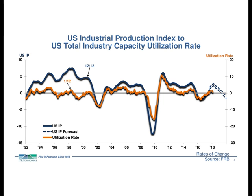That nascent curl over in the total industry capacity utilization rate supports our expectations of slower growth — a positive development because it says that what we've been talking about for the last four to five quarters is taking place as expected. This is one of the first leading indicators we'd expect to see curling over, supporting that Phase C cautionary growth phase in 2018.